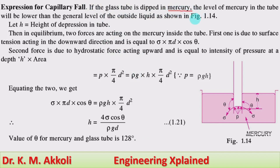Next we take the expression for capillary fall. If the glass tube is dipped in mercury, the fall of the liquid in the tube takes place — that is why mercury is used. The level of mercury in the tube will be lower than the general level of the outside liquid, as shown in figure 1.14. Here h is taken as the capillary depression or capillary fall.